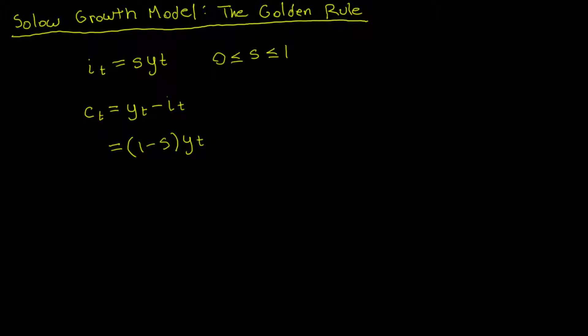Before explicitly solving for the savings rate associated with the golden rule, let's first rule out a few extreme cases — specifically the cases where you only save and where you don't save at all.